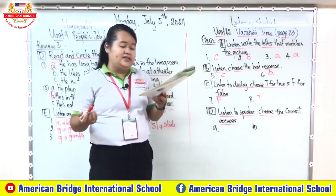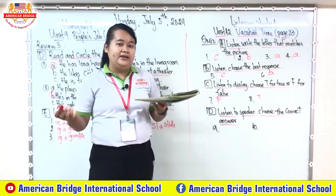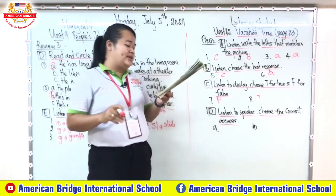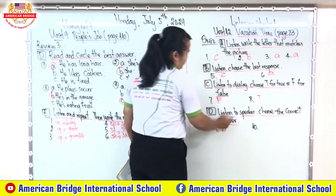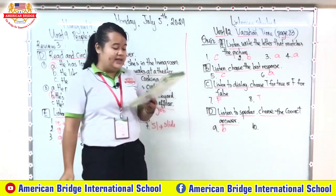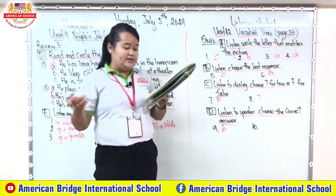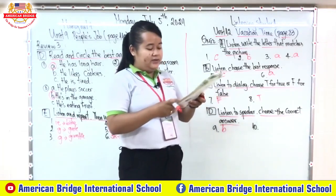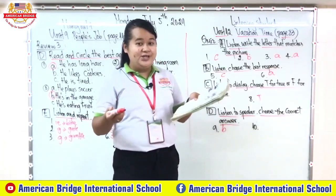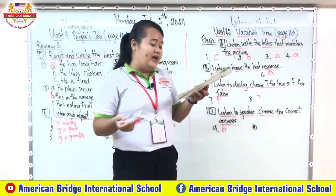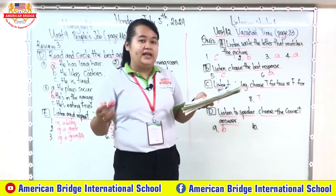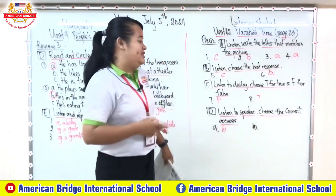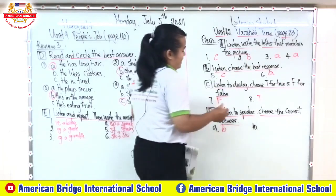Now for the last section, letter D. Number nine: what is the speaker going to do — A or B? The correct answer is letter B — she's going to take an airplane to South Korea. Number ten: how does the speaker feel about it — letter A or letter B? The correct answer is letter A.